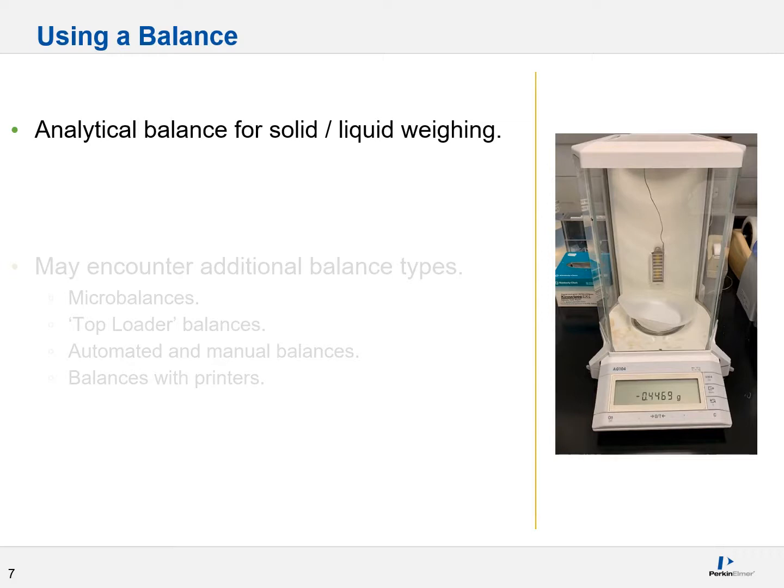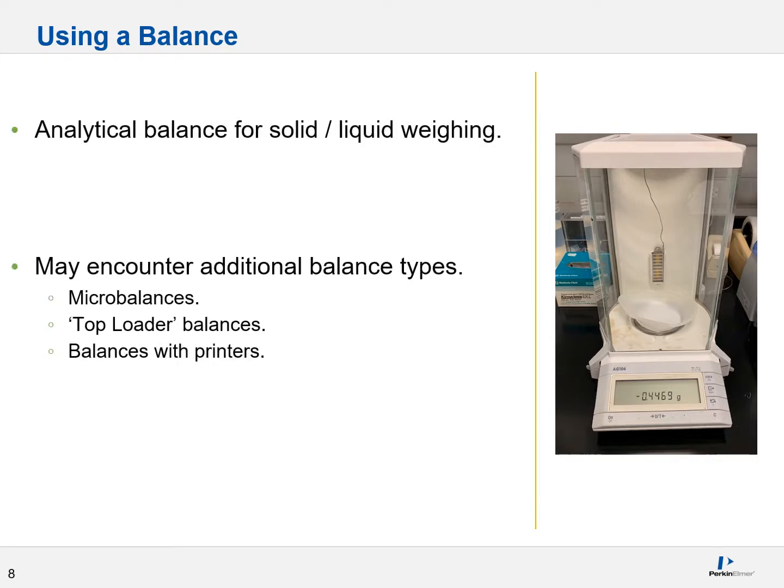Let's talk a bit about using a balance. An analytical balance is used for solid and liquid weighing, depending upon your application. What I've shown here is a particular type of analytical balance, a pretty mid-grade balance. You may encounter additional balance types, such as microbalances, which are used for microgram level measurements, top loader balances which are used for gross measurements or extremely large scale measurements. You may encounter balances with printers if you are in a regulated environment. But again, they all follow the same basic principle.